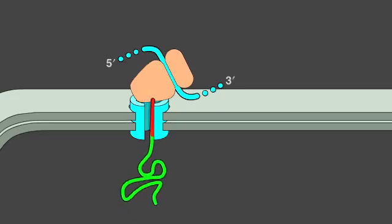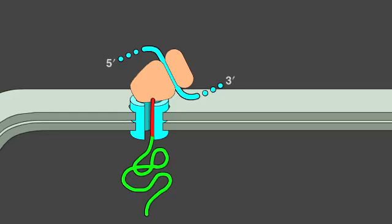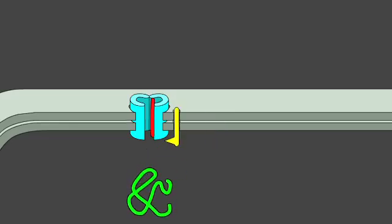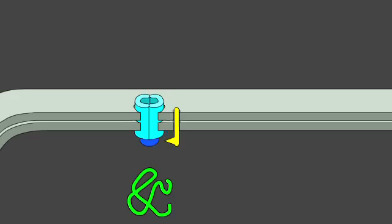Once the protein has passed through the membrane, it is released into the ER lumen, after the signal sequence has been cleaved off by a signal peptidase located on the luminal side of the ER membrane. The signal peptide is then released from the translocation channel into the membrane and rapidly degraded. It is thought that a protein serving as a plug then binds from the ER lumen to close the inactive channel.